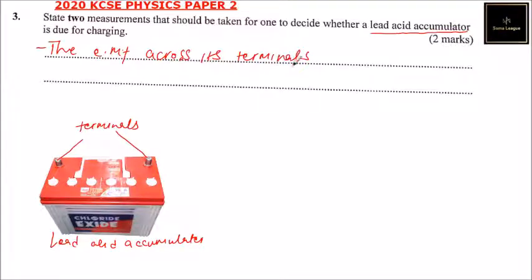Across its terminals, which we can say is the voltage. We check the voltage, or we say the PD, potential difference.